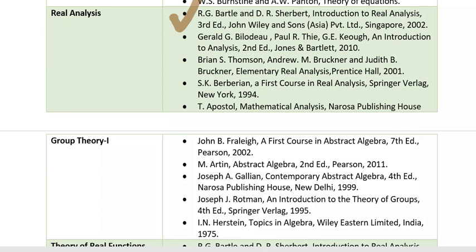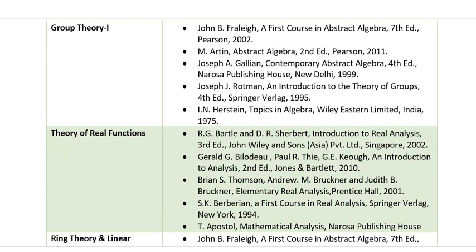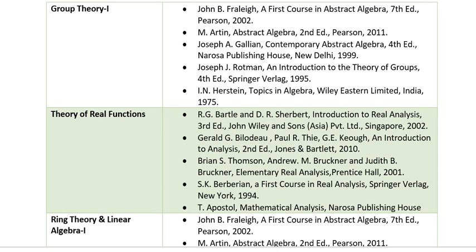The next topic is Group Theory, which is divided into two parts in undergraduate courses. For Group Theory, you can follow John B. Fraleigh's A First Course in Abstract Algebra, or Joseph J. Rotman's An Introduction to the Theory of Groups, or M. Artin's Abstract Algebra. For the topic of Theory of Real Functions, you can follow Bartle and Sherbert's book, and Apostol's book as well.